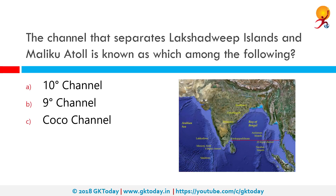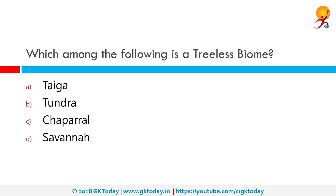The channel that separates the Lakshadweep islands and the Maldive Atoll is known as which of the following? The correct answer is the Nine Degree Channel. The Nine Degree Channel separates the Lakshadweep islands and the Maldive Atoll. The Ten Degree Channel separates the Andaman Islands from the Nicobar Islands.